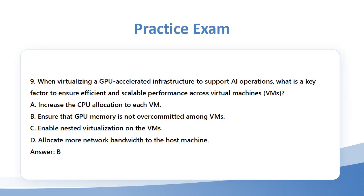Question 9: When virtualizing a GPU-accelerated infrastructure to support AI operations, what is a key factor to ensure efficient and scalable performance across virtual machines (VMs)? A. Increase the CPU allocation to each VM. B. Ensure that GPU memory is not over-committed among VMs. C. Enable nested virtualization on the VMs. D. Allocate more network bandwidth to the host machine. Answer: B.